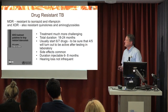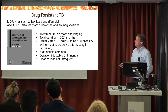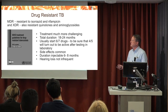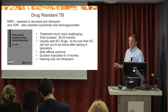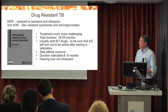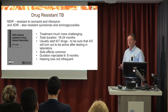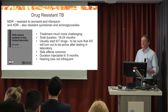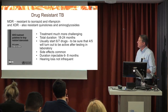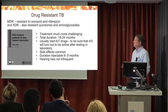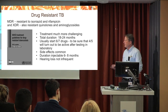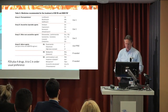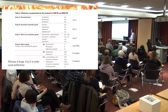Turning to drug-resistant TB: multi-drug-resistant TB is resistant to isoniazid and rifampicin, and extensively drug-resistant (XDR-TB) is additionally resistant to quinolones and aminoglycosides. Treatment is much more challenging — the total duration is 18 to 24 months. We usually have to start with six or seven drugs to ensure four or five will turn out to be active against the particular TB isolate. With this many drugs, side effects are extremely common, and up until recently we had to include up to six months of injectable treatment, which is not infrequently associated with hearing loss.